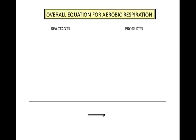Let's look at the reactants and products for each stage of cellular respiration. Glycolysis starts with glucose. For the energy investment stage, ATP is a reactant and ADP and inorganic phosphate are products. For the energy producing stage, ADP and inorganic phosphate are reactants and ATP is a product. NAD+ is also a reactant and NADH is a product. Glycolysis ends with the production of pyruvic acid.